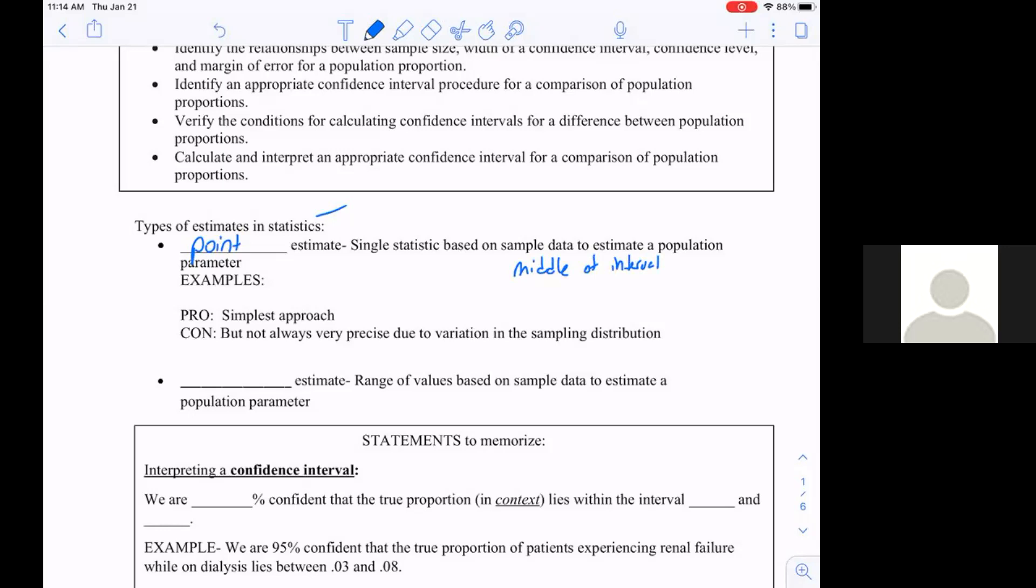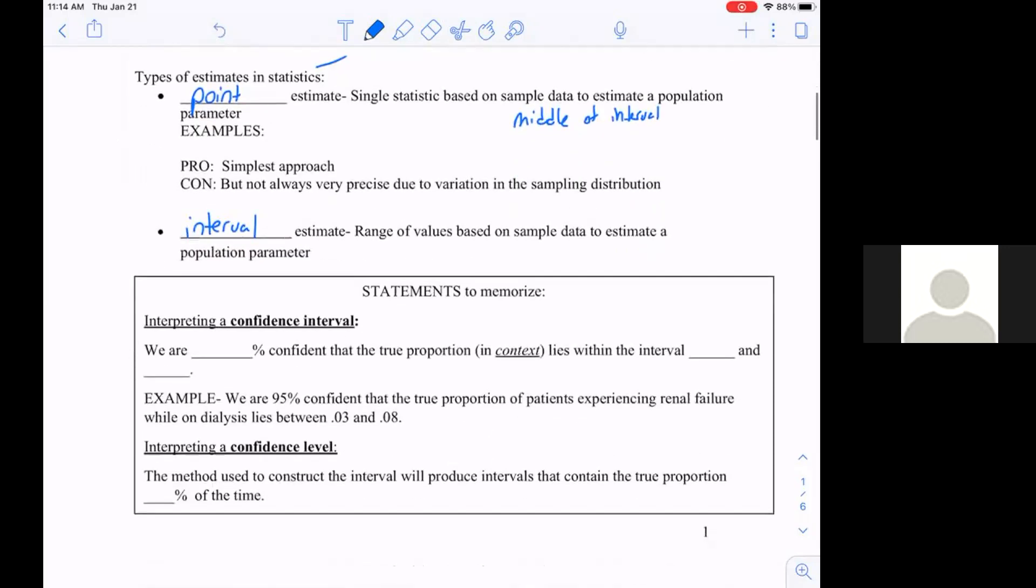The other one's going to be called the interval estimate. That's going to be the range of values. We have to be able to explain the parts that go with the interval.